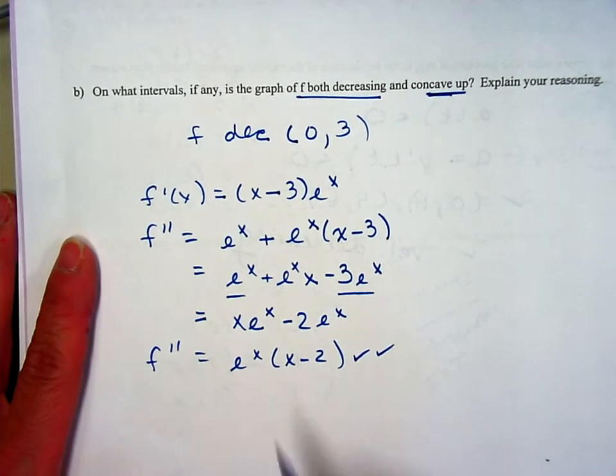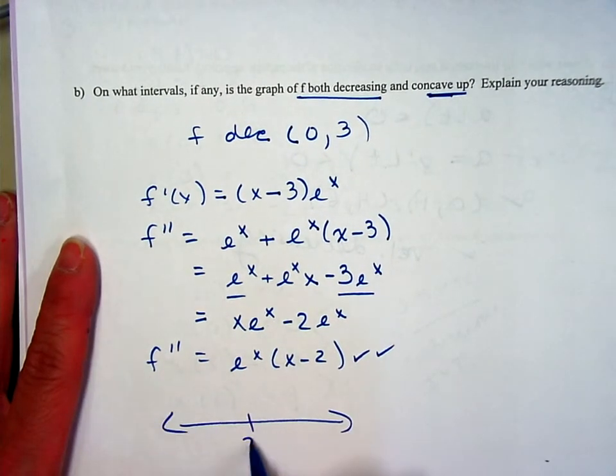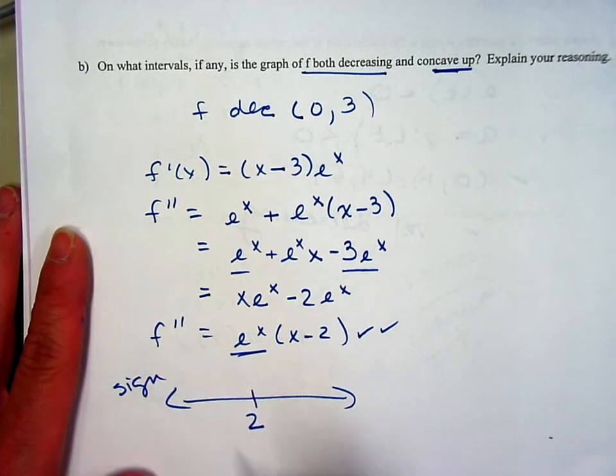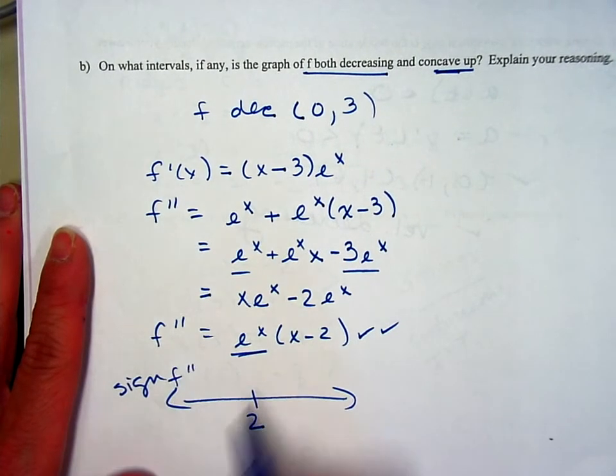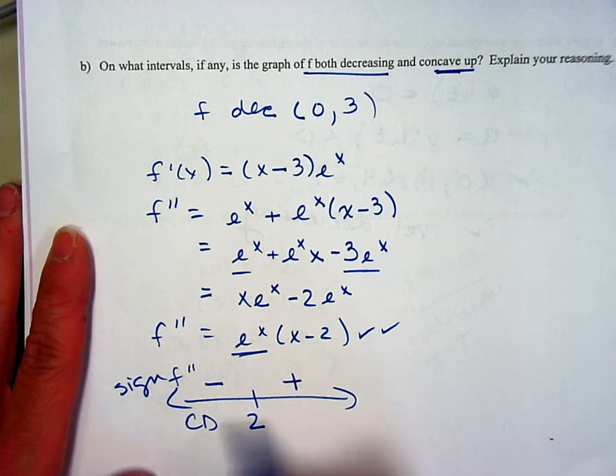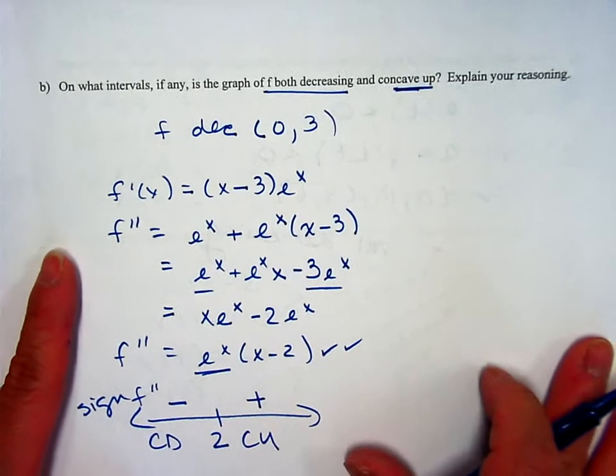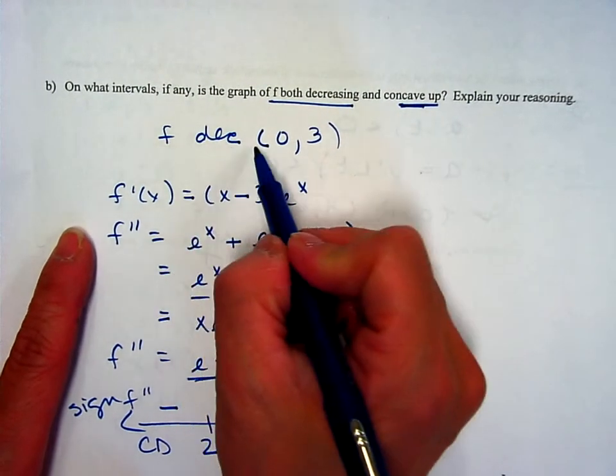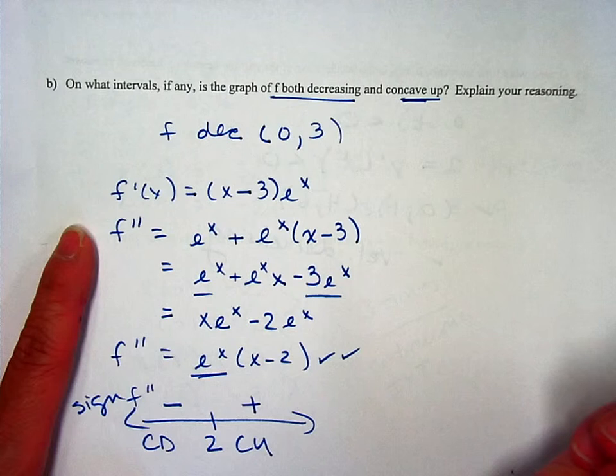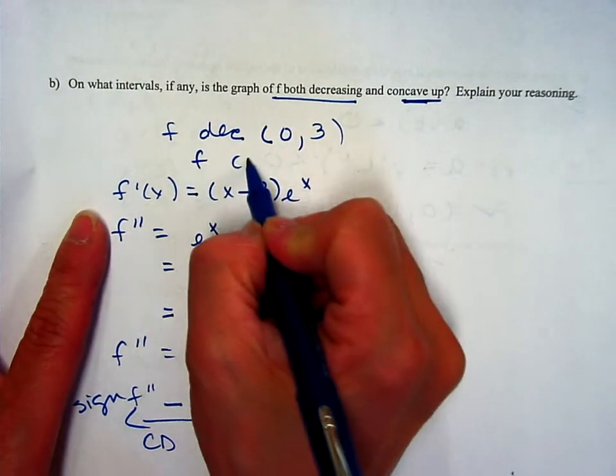The only critical numbers are going to be 2 because this can never be negative. So when I do my number line, the sign of the second derivative is negative here, positive here. So concave down, concave up. So I figured out that it's decreasing from 0 to 3 from part A. And then I know f is concave up from 2 to infinity.